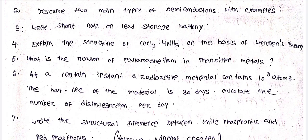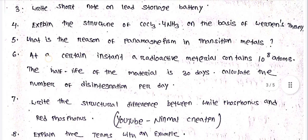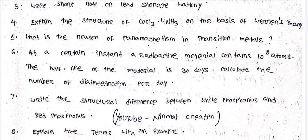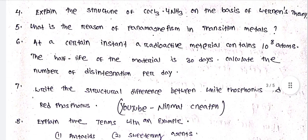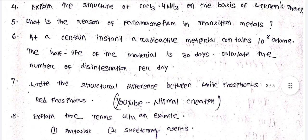Write short notes on lead storage battery. Explain the structure of COCl3-4NH3 on the basis of Werner's theory. What is the reason of paramagnetism in transition metals?